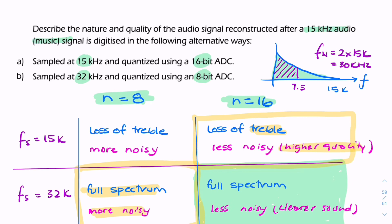The question says describe the nature and quality of the audio. For option A, sampled at 15 kilohertz and quantized at 16 bits, we'd lose out on the treble - have the bass but not the treble - but we'd have a less noisy, higher quality signal. For option B, 32 kilohertz and 8 bits, it would be a noisier signal but full spectrum. We'd have all the audio, all the spectrum, the bass and the treble.